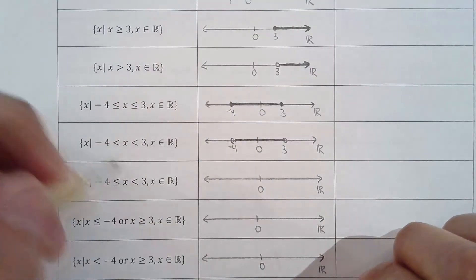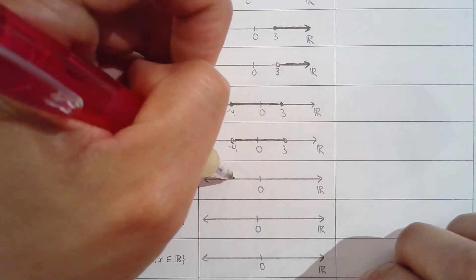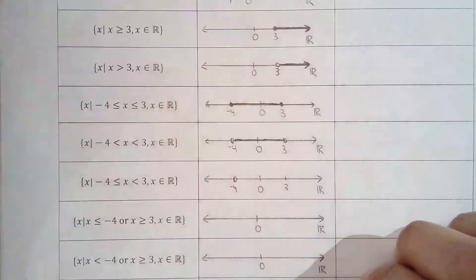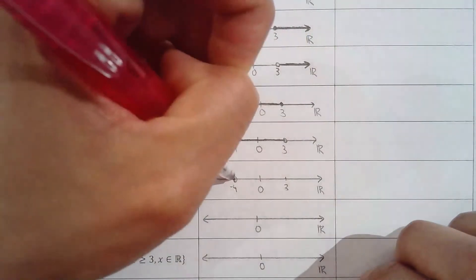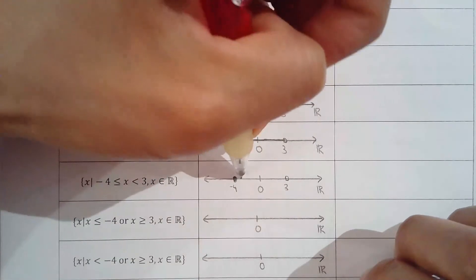Negative 4 to 3, but include negative 4 and don't include 3. So it's a semi-open interval — closed circle at negative 4 but open circle at 3.